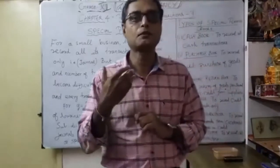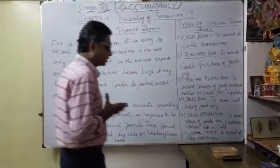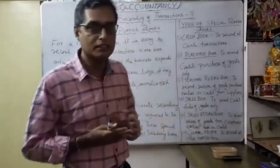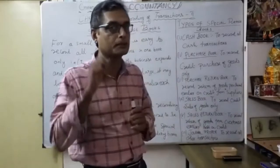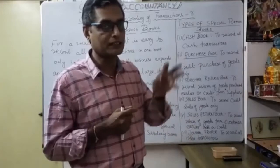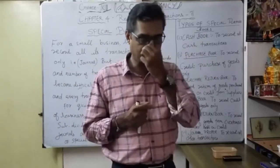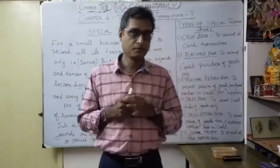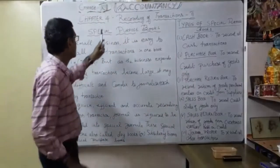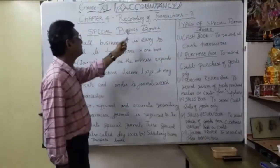So now we are moving for Chapter Number Four: Recording of Transaction, Part Two. This chapter is very, very interesting and very important. As you know, you already learned about one important ledger — the cash book — in the previous session. You learned the cash book, how to prepare journal entries to cash book, and how to get the balance. So the fourth chapter discussion is based upon Recording of Transaction, Part Two — Special Purpose Books.